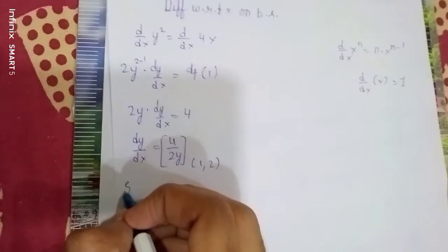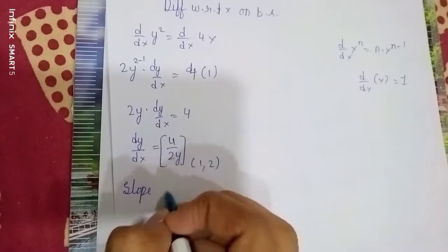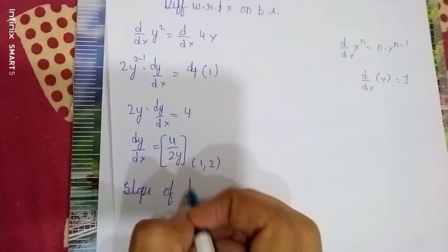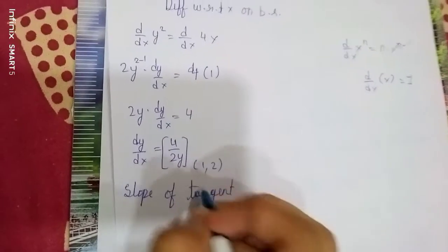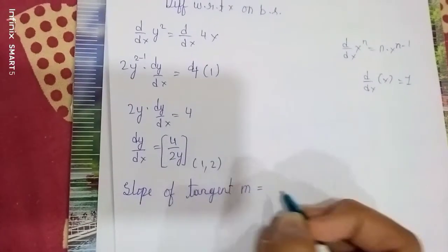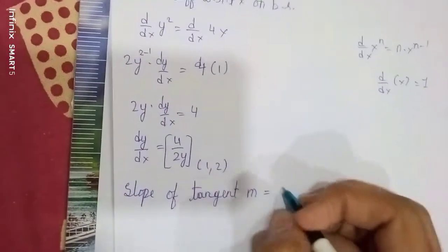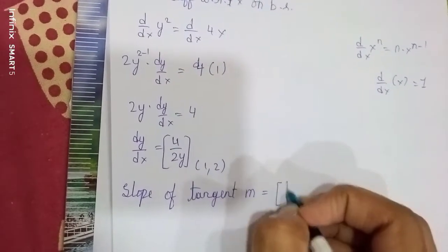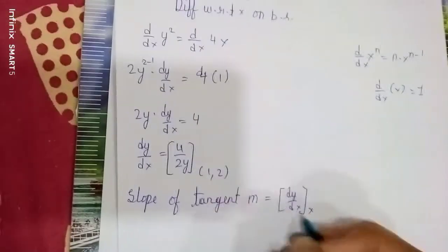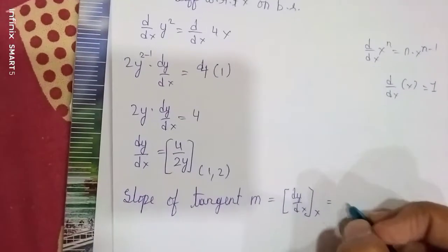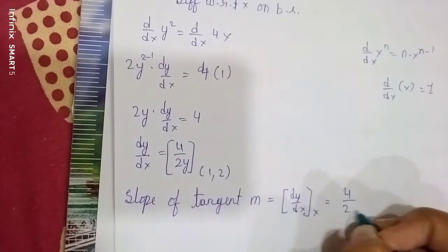Now, slope of tangent, we need m. m = dy/dx. So here what we have?